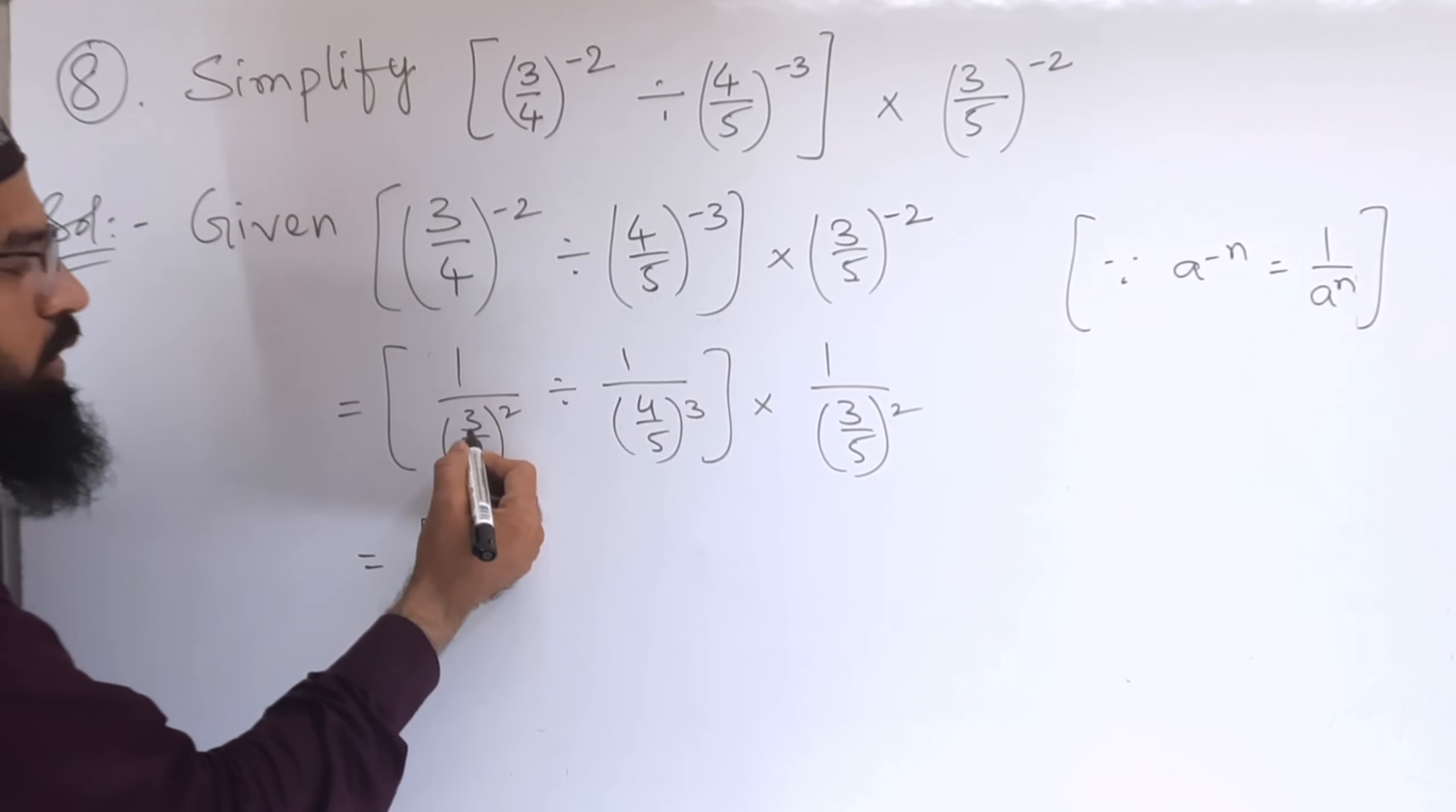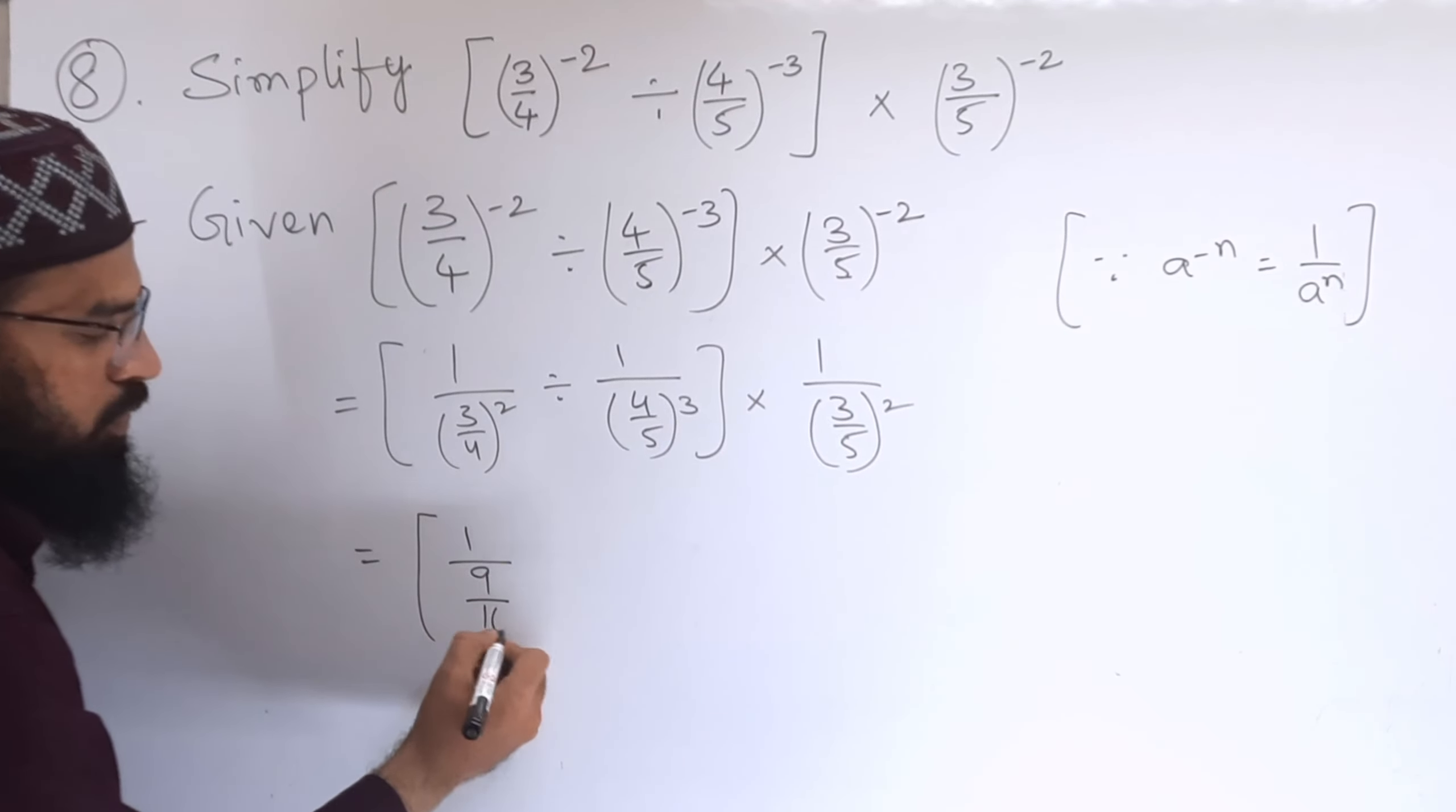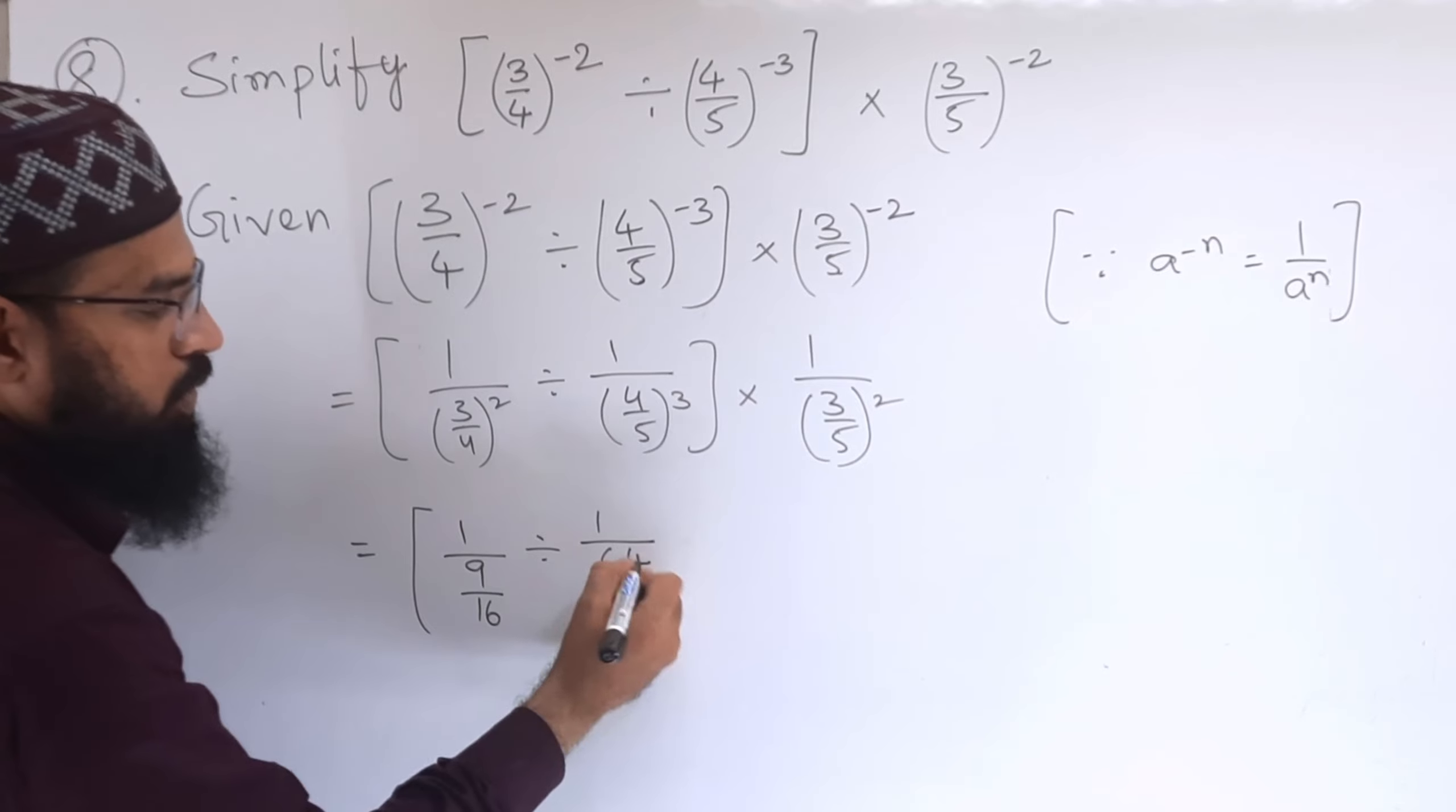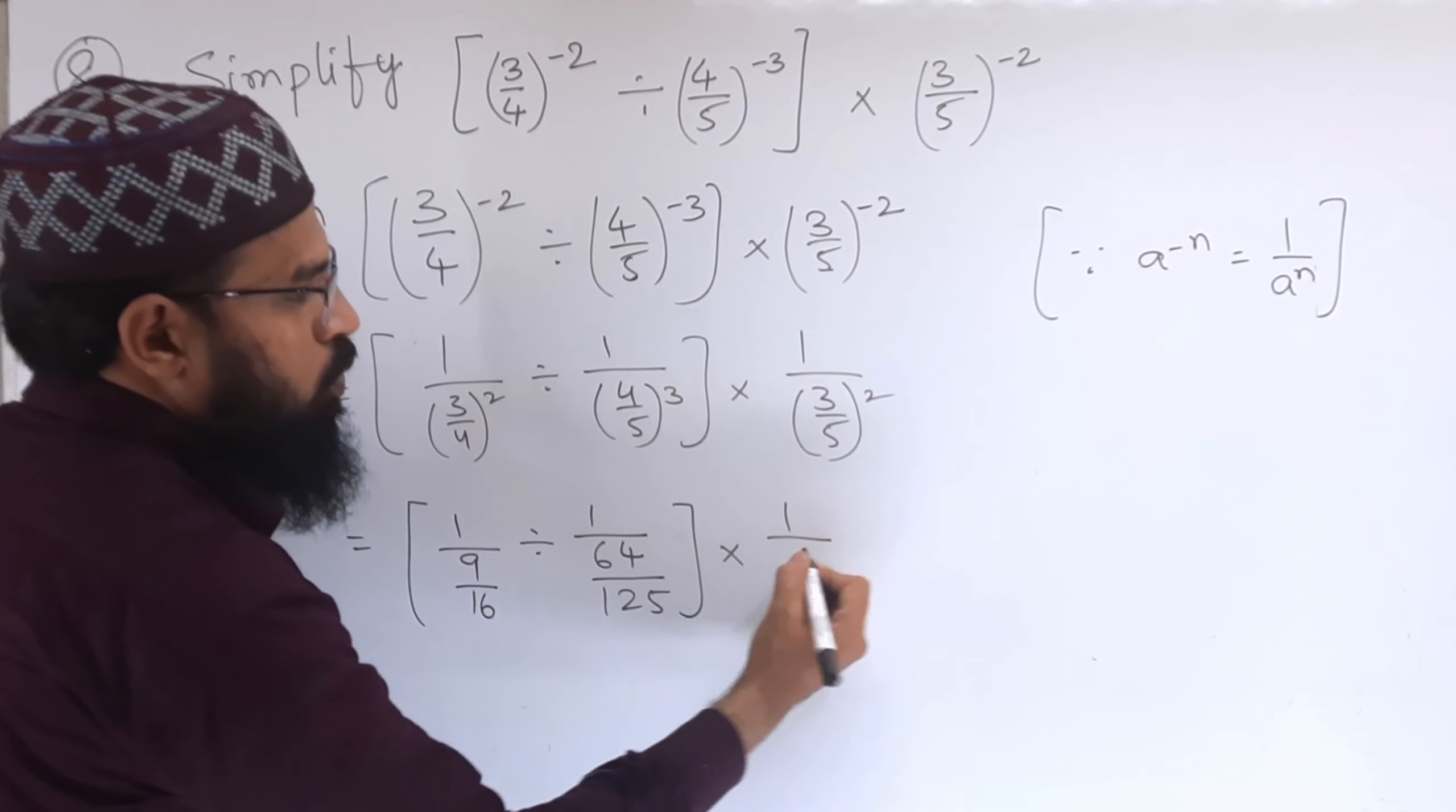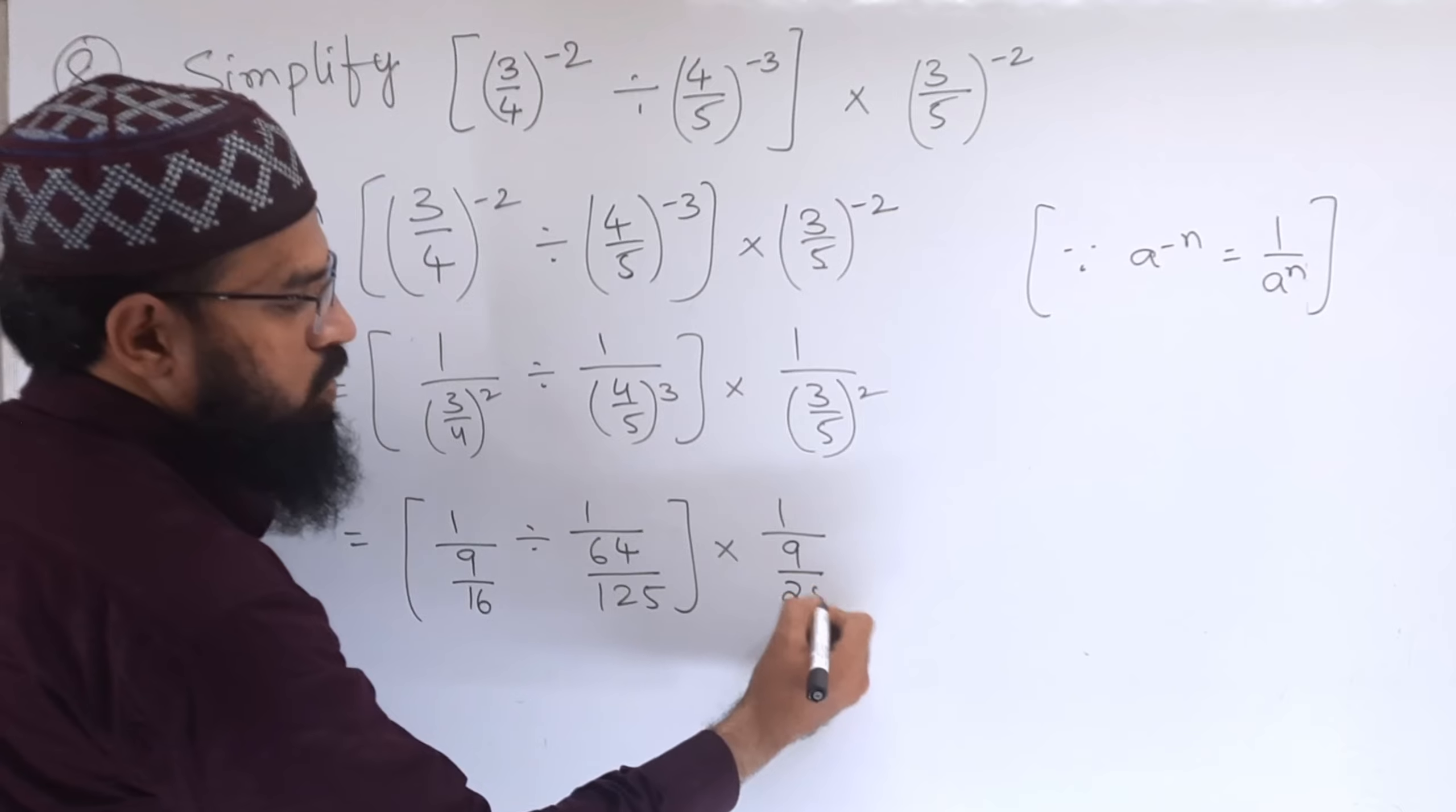As we know, 3 square is 9, 4 square is 16. So 9/16 divided by 1 by 4 cube is 64, 5 cube is 125, into 1 by 3 square is 9, 5 square is 25.